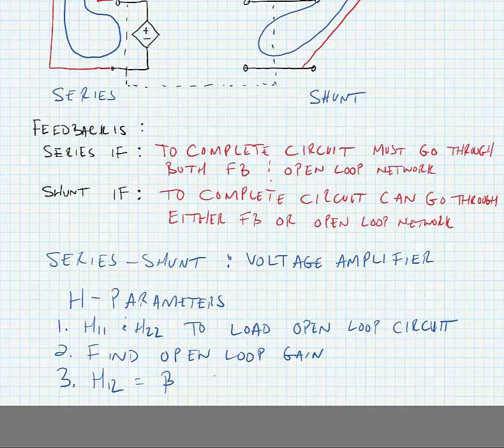And at that point we have everything we need to find the closed loop gain of the circuit. A closed loop would be equal to the open loop gain divided by 1 plus the open loop gain times beta.